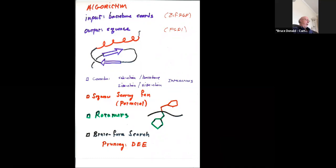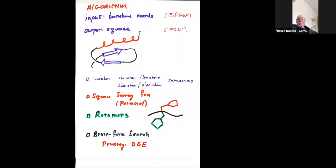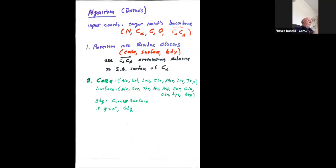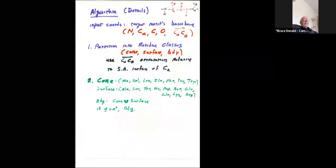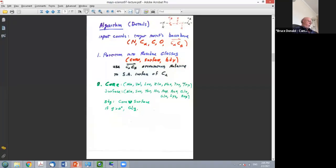What does it mean to input the backbone coordinates? The algorithm takes the coordinates of the backbone atoms. I want to review peptide and protein geometry and names of atoms so you can really understand what the input is — we'll use that throughout the term. With your permission, I'm going to go to a document camera where I will draw on paper.